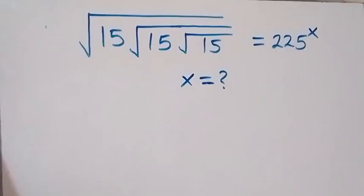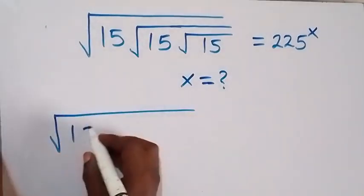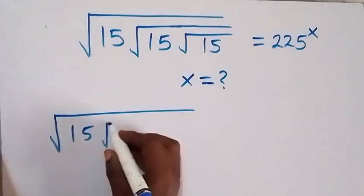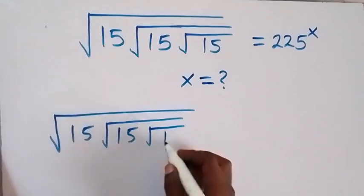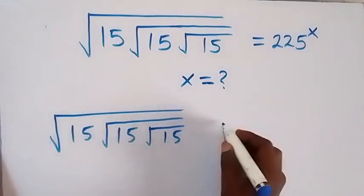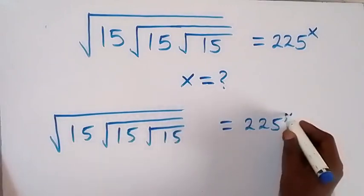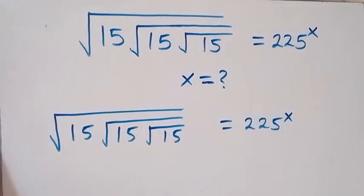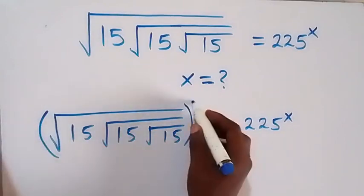Hello, you are welcome. How to solve this nice problem involving roots. Here we have square root of 15, then inside that we have square root of 15, then we also have square root of 15, which equals 225 raised to power x. The first thing we do here is take the square on both sides.